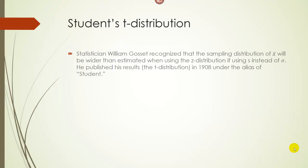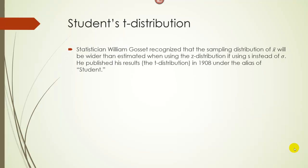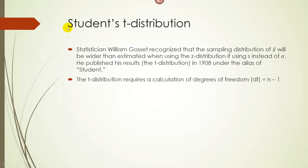Let's explore the T distribution. The story goes that William Gossett, over 100 years ago, recognized that the sampling distribution of X-bar will be wider than we estimate it if we're using S instead of sigma. He published his distribution under the pen name 'Student' — reportedly because he wasn't allowed to publish under his own name while working for a company. Hence, it's called Student's T distribution. This T distribution requires a calculation of degrees of freedom, which for our purposes is simply the sample size minus one. So if we have a sample of 15 people, our degrees of freedom will be 14.